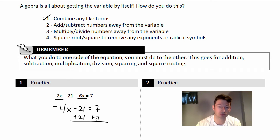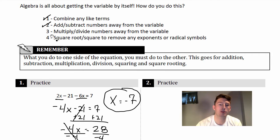All right, Step 3, multiply or divide numbers away from the variable. That's a negative 4x, so I'll divide by negative 4. Divide by negative 4, and that crosses out. 28 divided by negative 4, x equals negative 7. And the last step here, square root or square numbers, we didn't have to do that, so we're not going to worry about that in this situation.